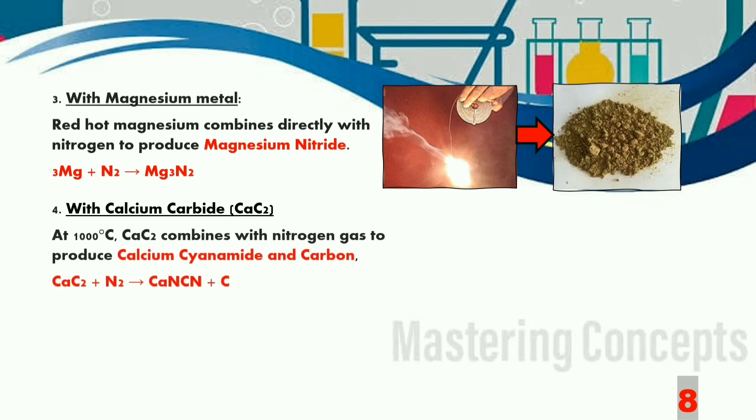Here nitrogen reacts with a compound known as calcium carbide which is CaC2. At a high temperature of 1000 degree C, calcium carbide combines with nitrogen gas to produce calcium cyanamide and carbon. This mixture of calcium cyanamide and carbon is known as nitrolim.